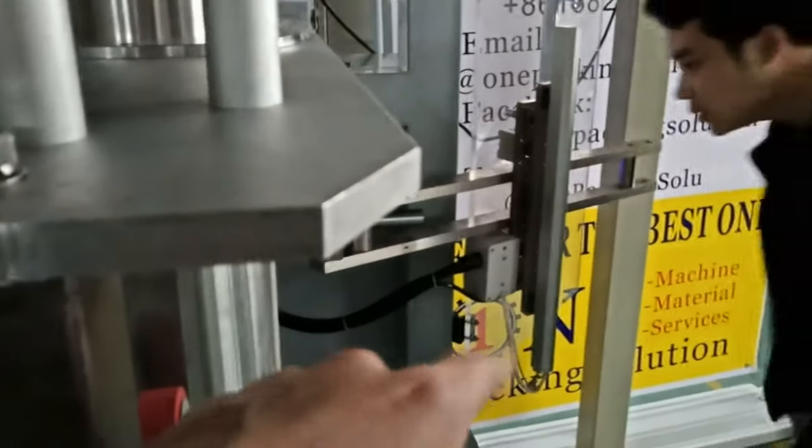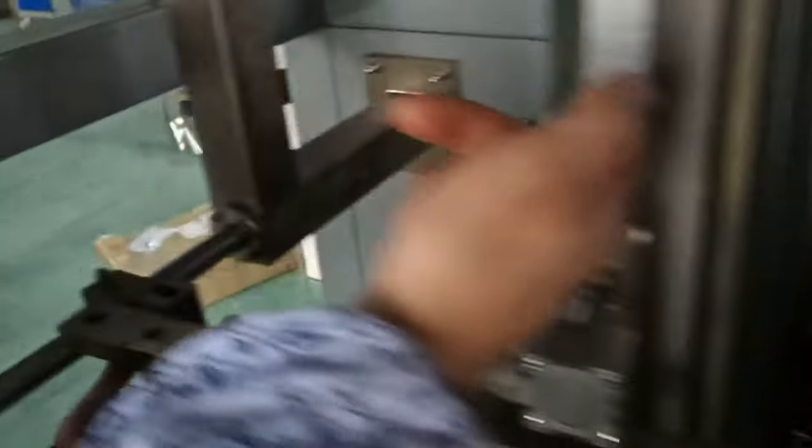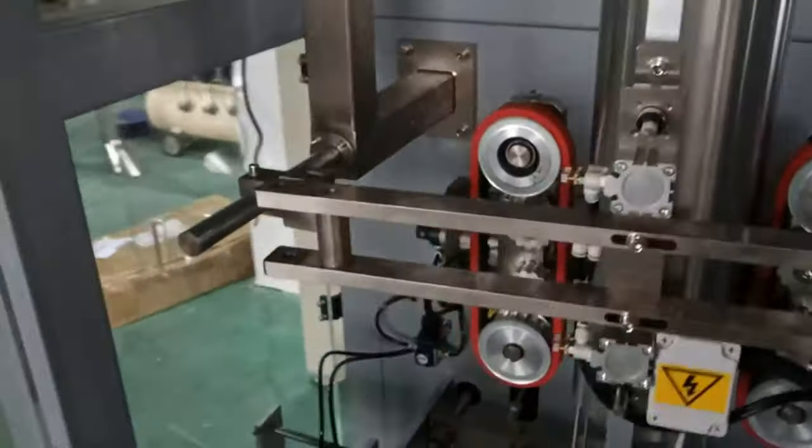The next step is you need to close this one. Okay, you see it's already touching but cannot close, so you need to loosen the handle. Also this one, also this one. After you loosen it, you go to the back side of the main machine.